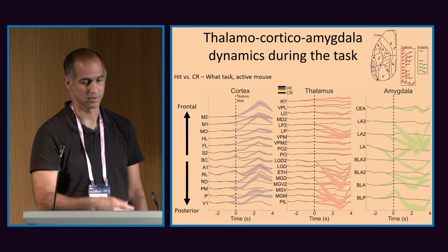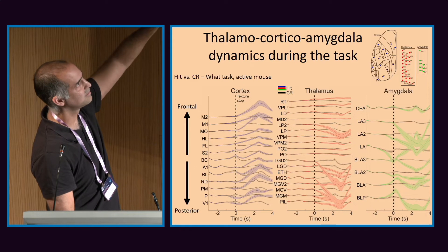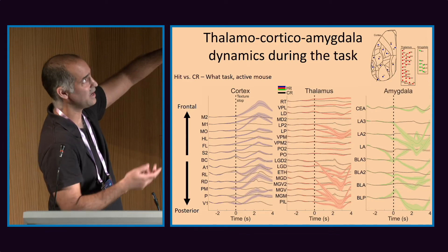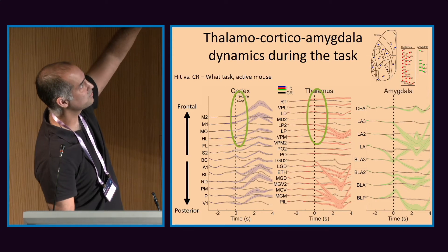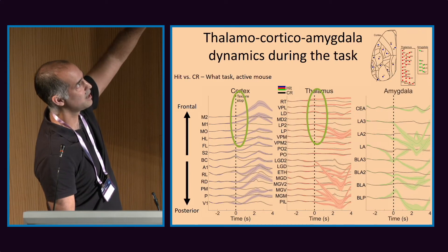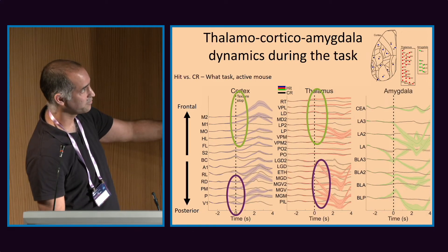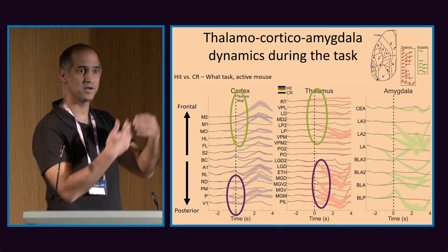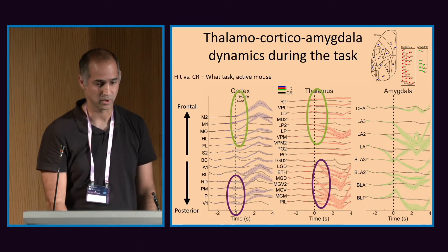What happens in the thalamus? We get activity across many different areas — cortex, thalamus, amygdala, from frontal to posterior. For an active mouse, there is higher activity in frontal cortical areas, but also in frontal thalamic areas, with higher activity in HITs and correct rejections. In the posterior part of cortex, area P goes down, area V1 also, and some posterior thalamic areas like auditory thalamus also go down — relatively similar to cortex.